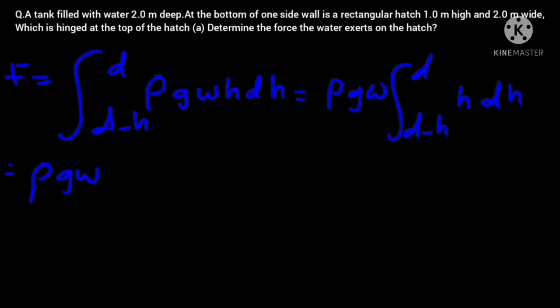So this is equal to ρ times gravity times width times h squared over 2. So we are only integrating here. So upper limit d, lower limit d minus h.